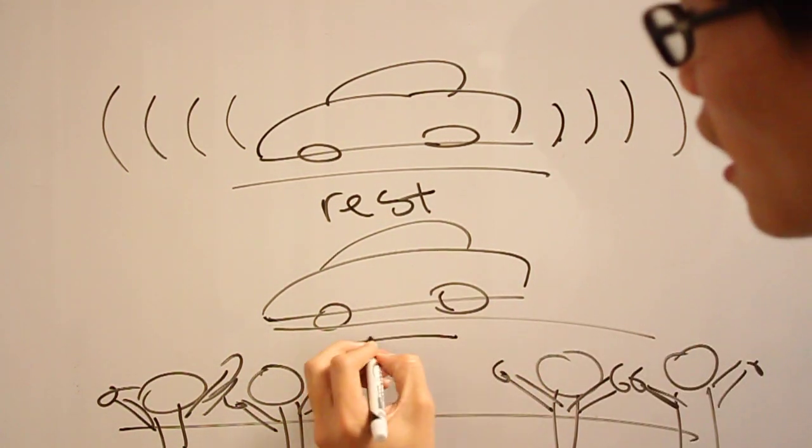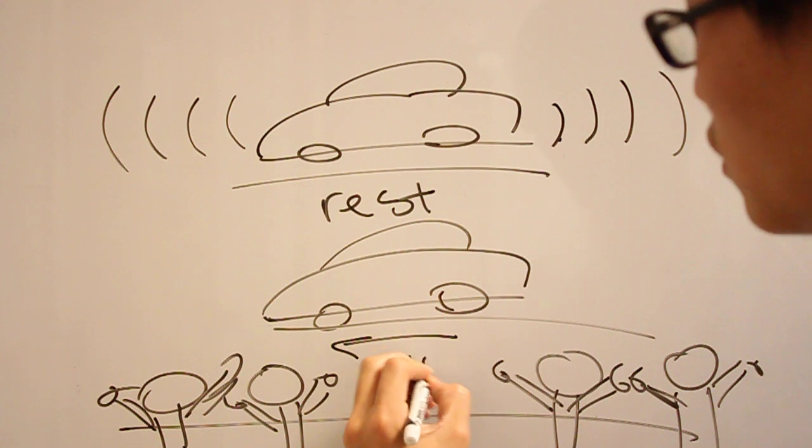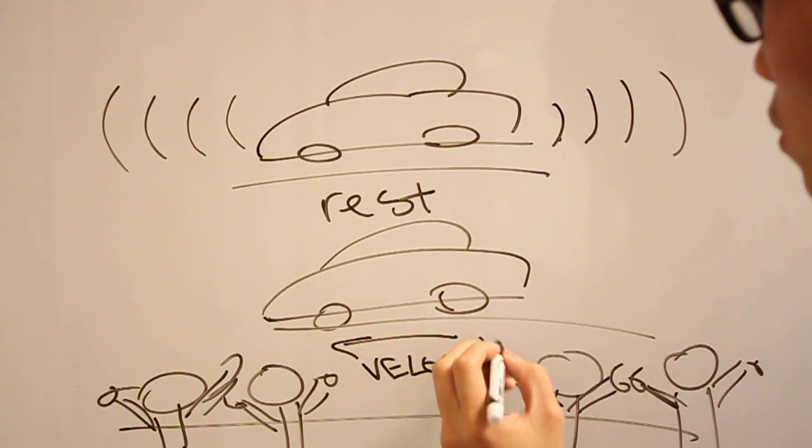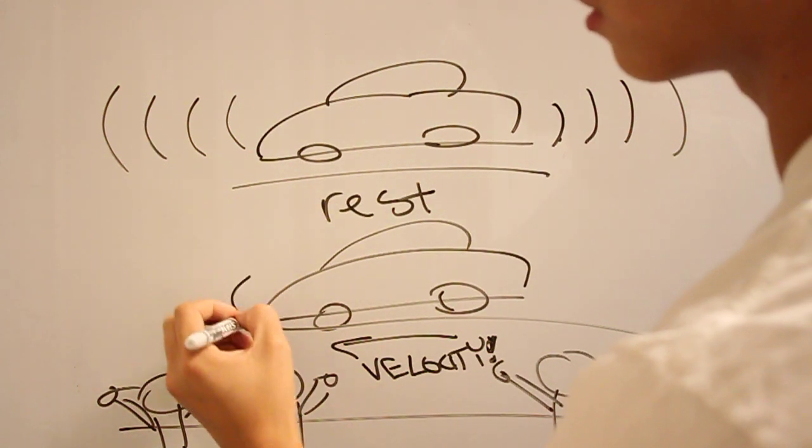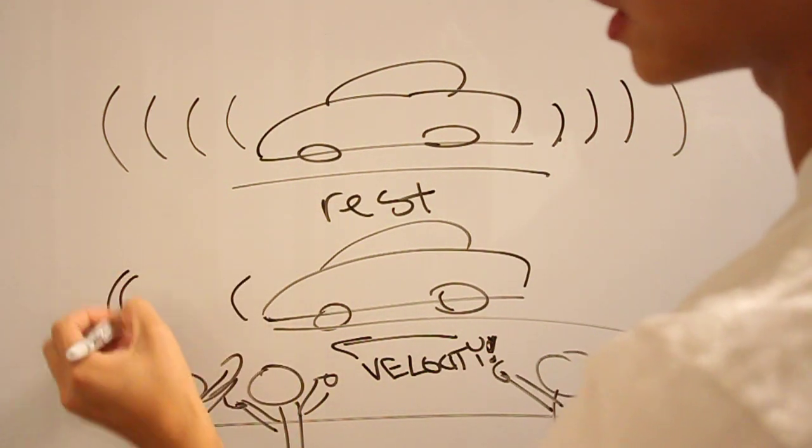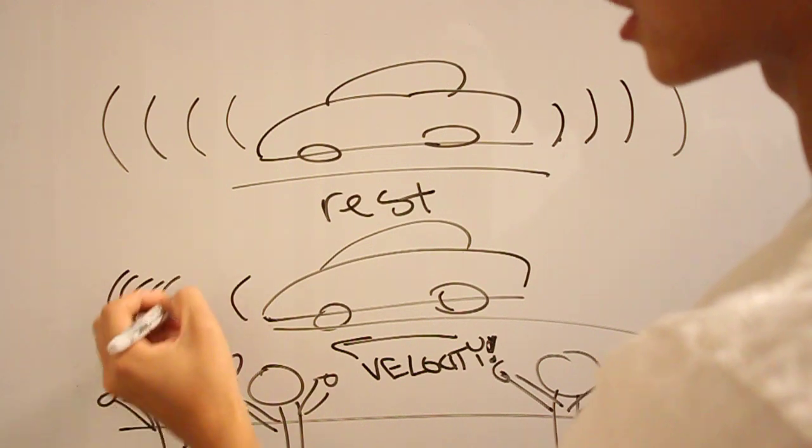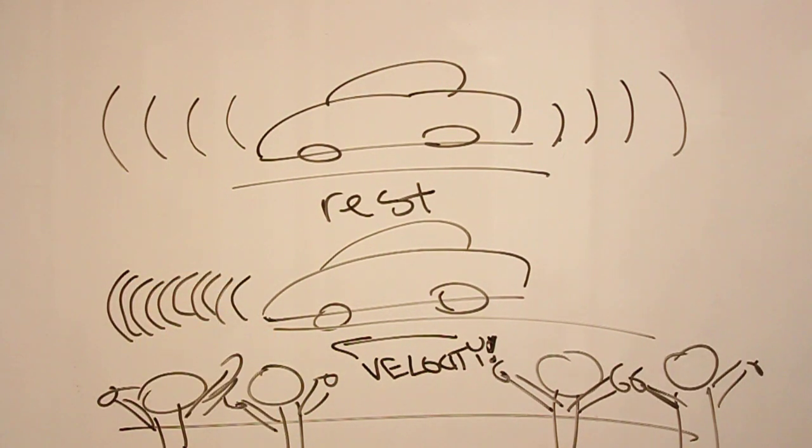But because the car now has a velocity in one direction, it's almost racing against its own sound waves. So it emits a sound wave out here, but then instantly, because it's catching up to those sound waves, the same sound waves emitting out of that car are getting closer and closer to each other.